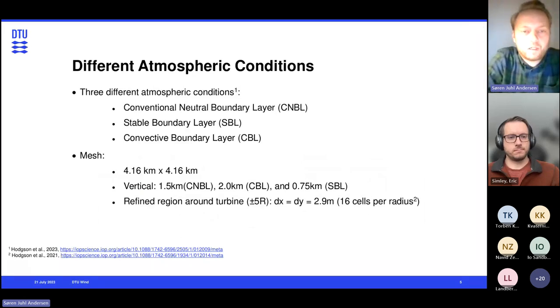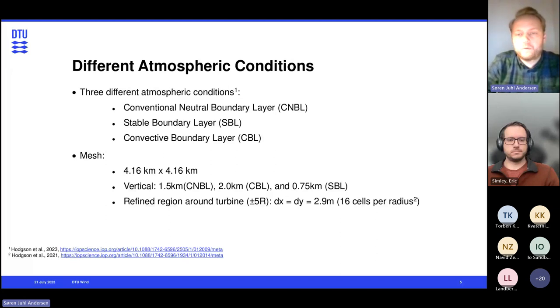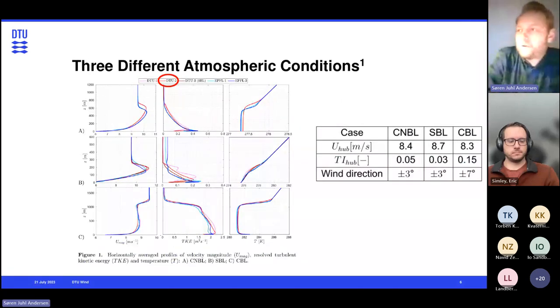The mesh used here is 4 by 4 kilometers, and then the vertical extent differs between the three different atmospheric conditions relative to essentially the height of the surface layer. So we have a refined region around the turbine of plus minus 5r, where we have resolution of just under 3 meters, which correspond to 16 cells per radius. The atmospheric boundary layer conditions, they are based on a study that Emily Hudson did together with our colleagues at EPFL. So they compared ellipsis 3D against the wire code from EPFL. I won't go too much into the detail, but here's the velocity profile, the TKE profile, and the temperature profile for the three different atmosphere conditions. And we're going to use basically the red line that I have circled here.